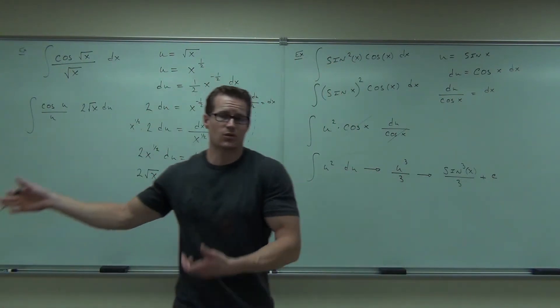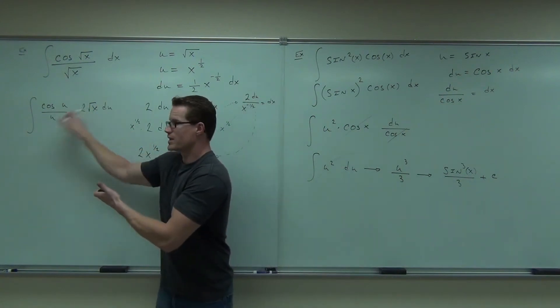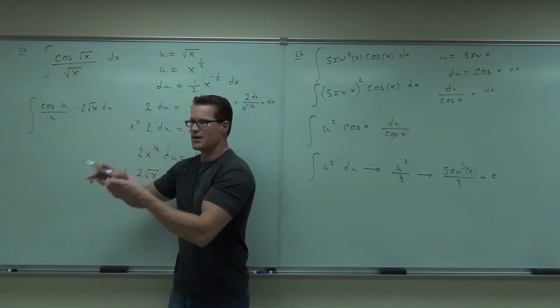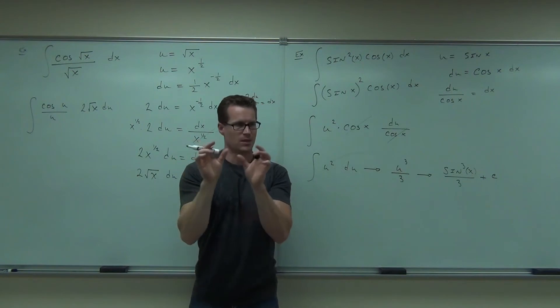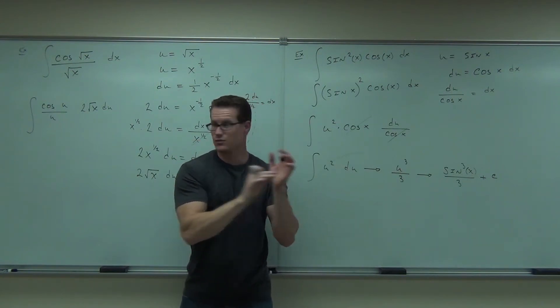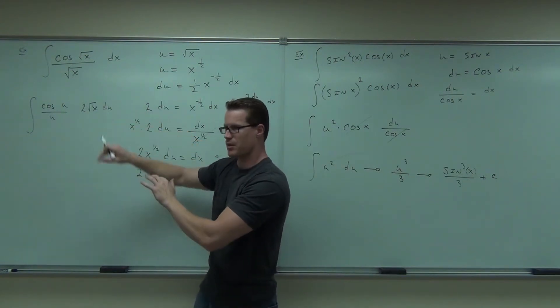Now, we did something wrong because we can't cross that out, and that's a problem. If you have two different variables, that's typically a big problem for you. You've done something, a mistake in the previous problem.